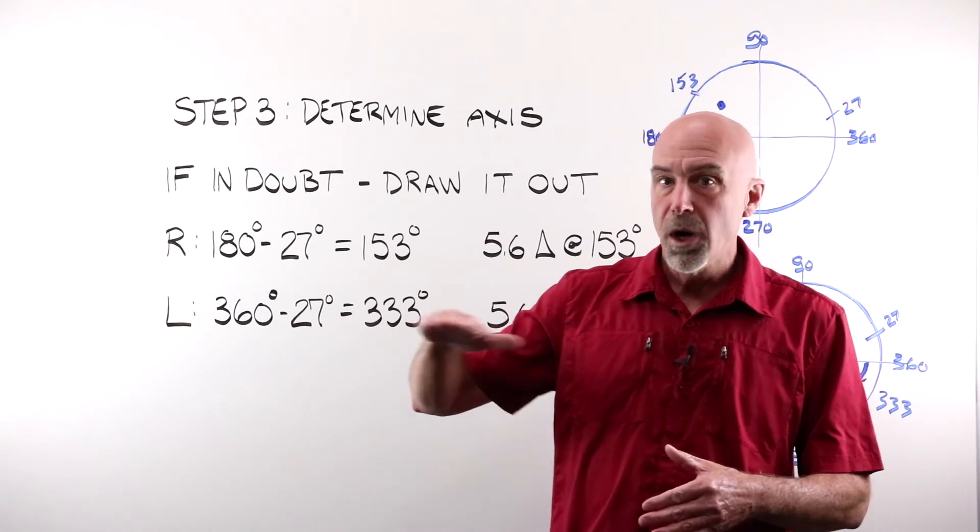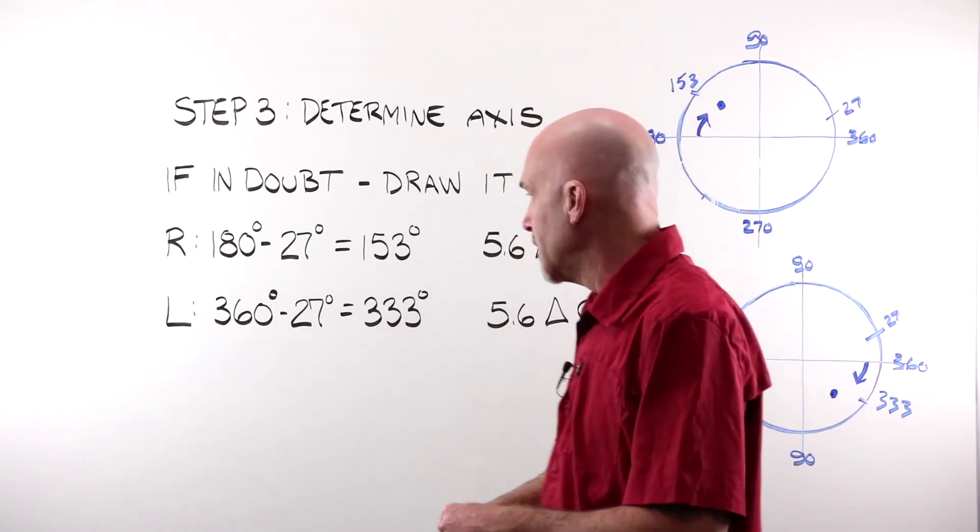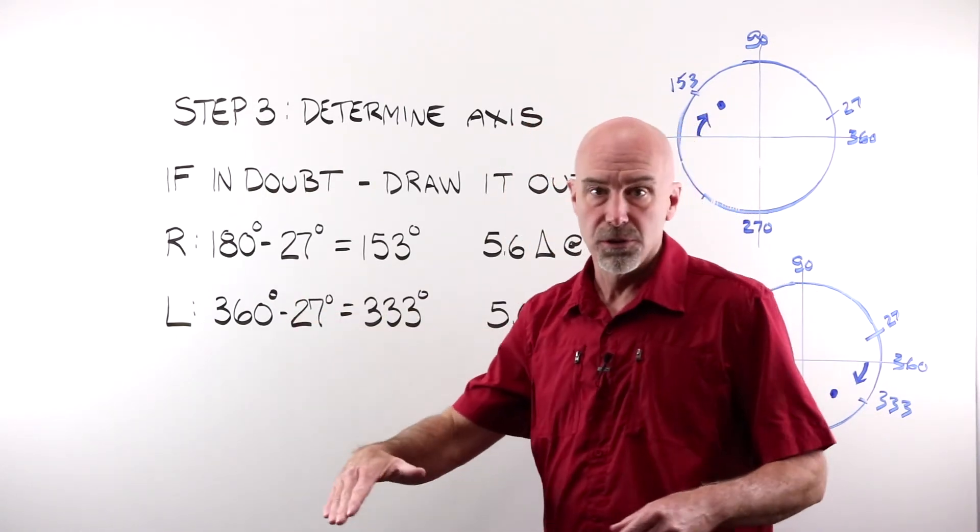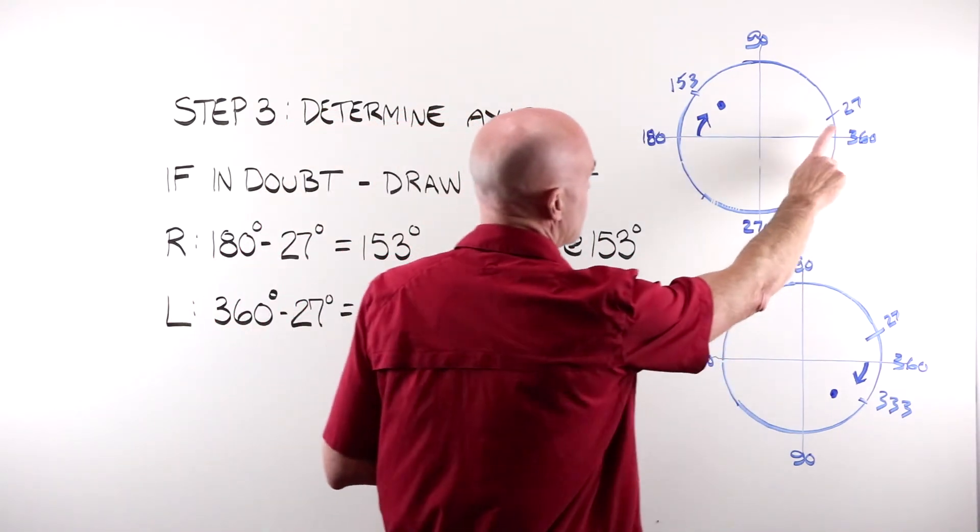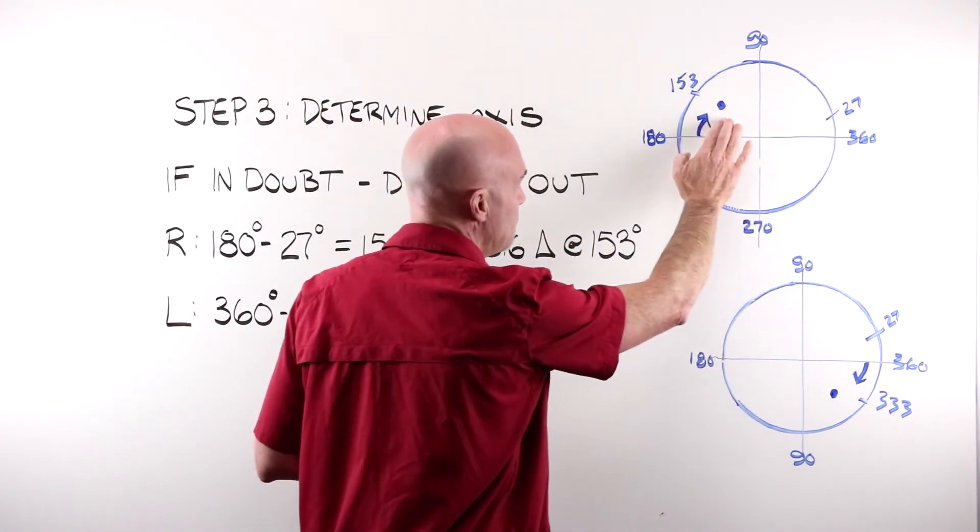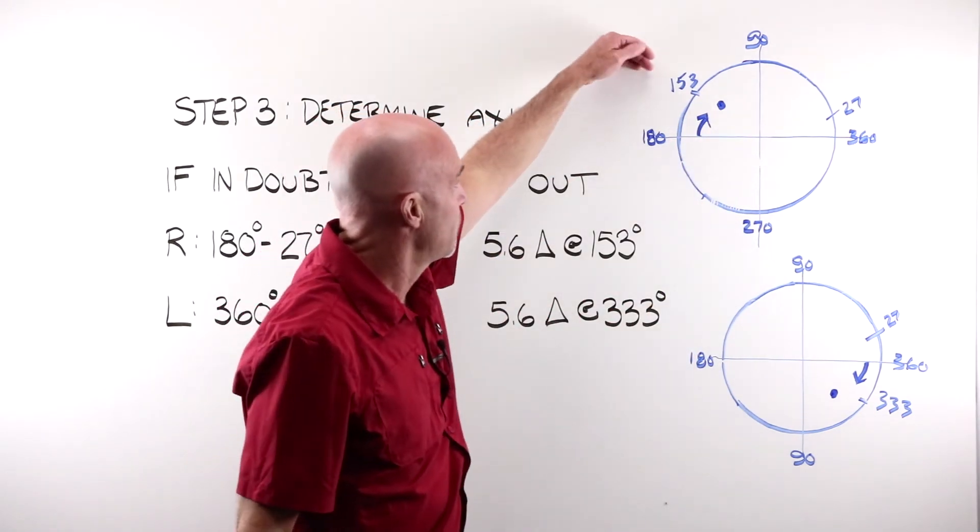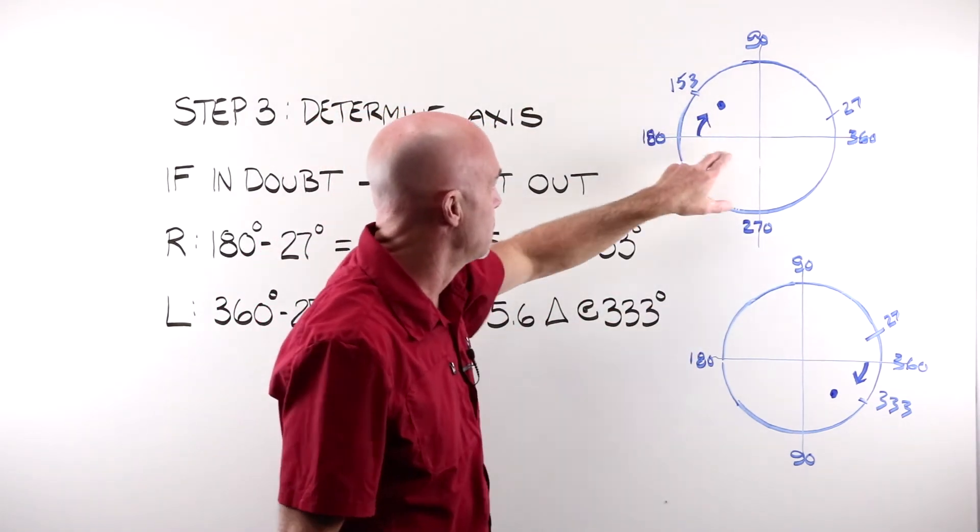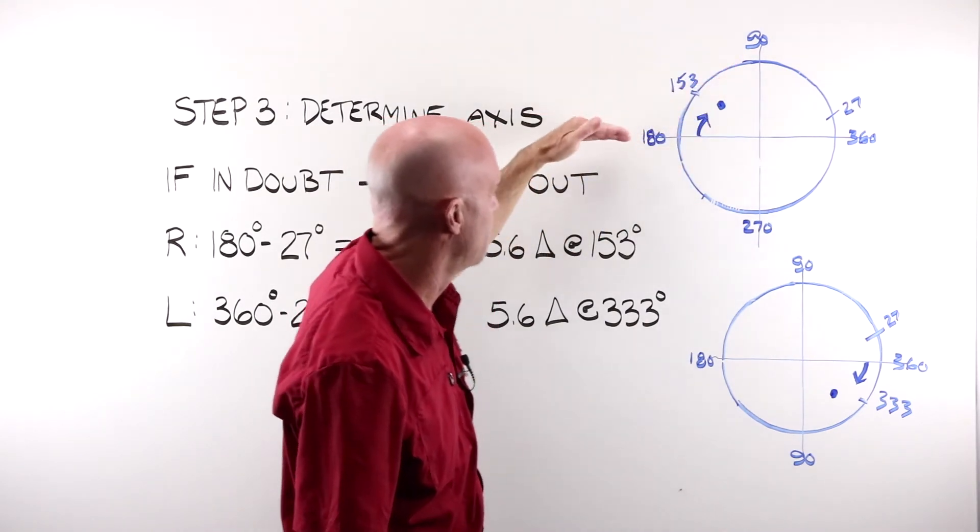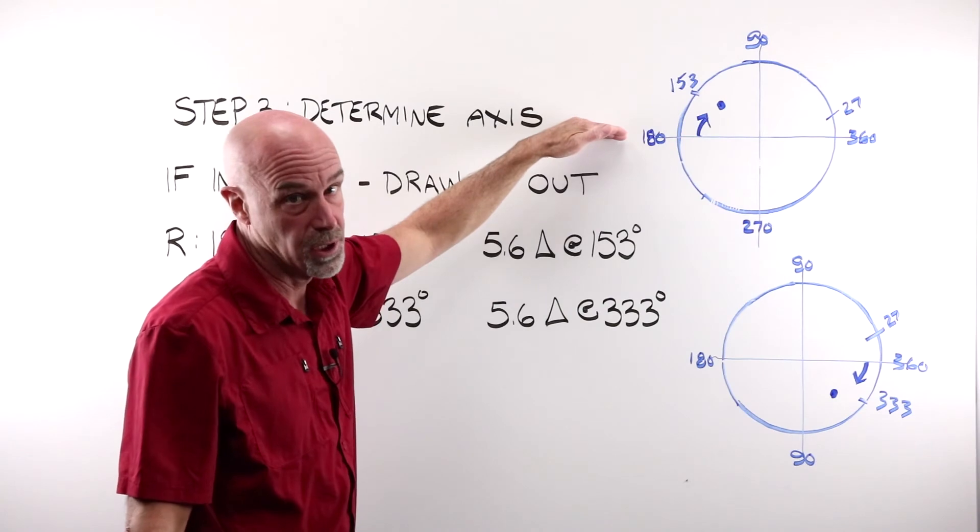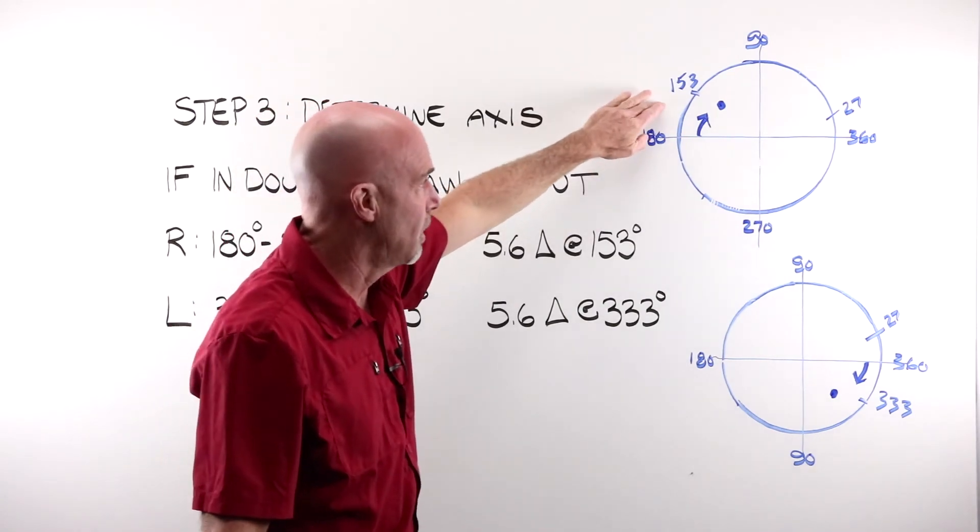For those of you who want to work the math through, we ended up, you'll recall, at 27 degrees. And if you are here, but we need to be here, to reach the 153, we would be moving 27 degrees back up into this quadrant from the 180 degree line. That's where that would come from.